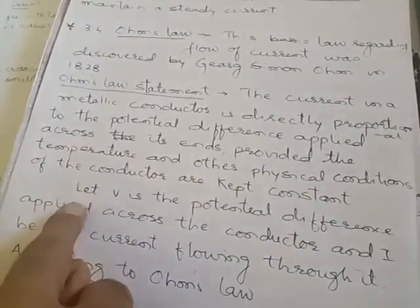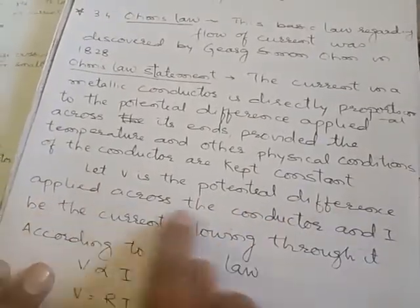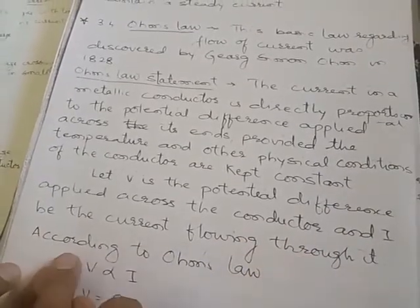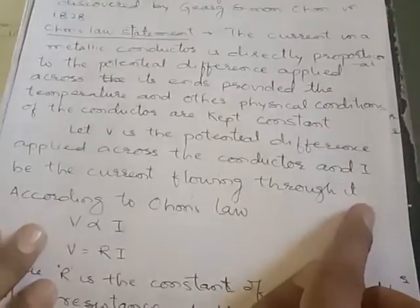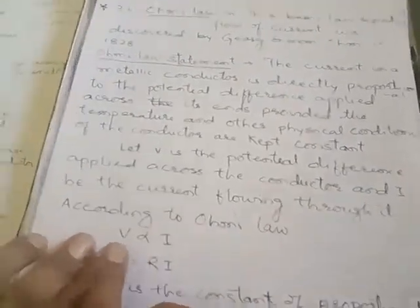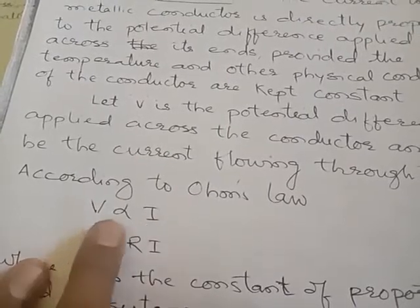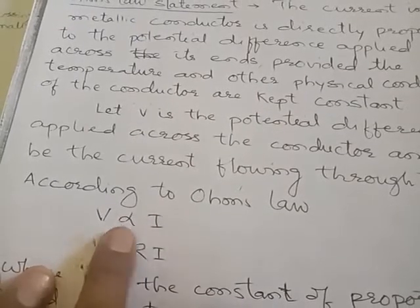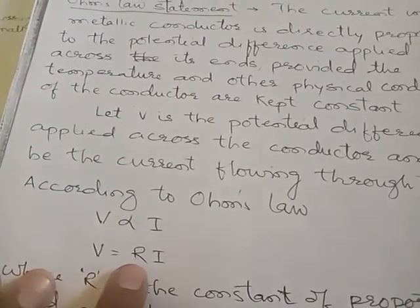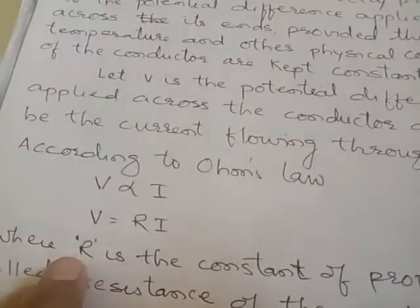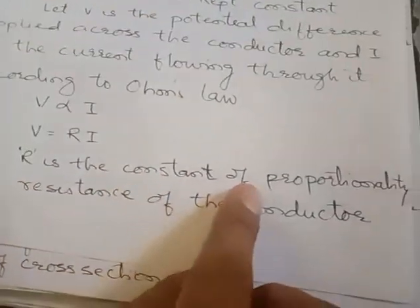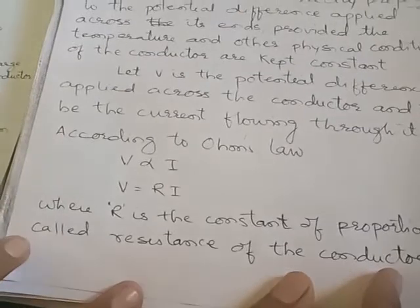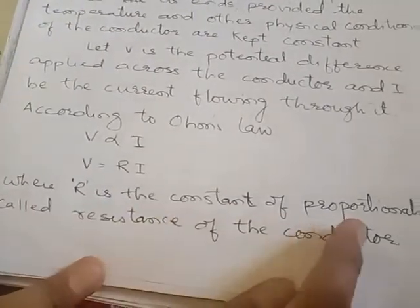If V is the potential difference applied across the conductor and I is the current flowing through it, then according to Ohm's Law, V is proportional to I. This symbol is called the proportionality sign. To remove this proportionality sign, a constant is required. So V = RI, where R is the proportionality constant.